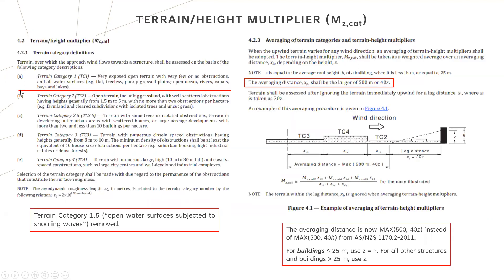For the terrain height multiplier, the largest removal is TC 1.5 for open water surfaces subjected to shoaling waves — you usually had to have water over a distance of about 10 kilometres, which was hard to prove, so it was taken out. Now you've just got TC 1 for water and TC 2 for land. The other interesting change is the averaging distance: it's now the maximum of 500 metres or 40 times Z, instead of 500 metres and 40 times H. This distinction is useful for buildings under 25 metres, where you use Z equals H, versus over 25 metres where you use Z directly.